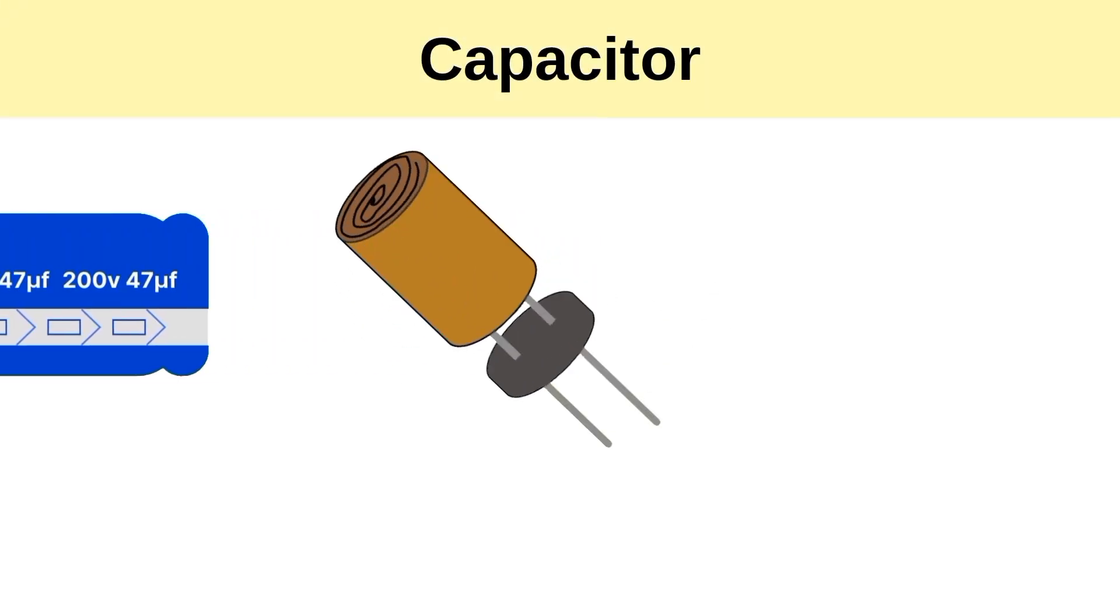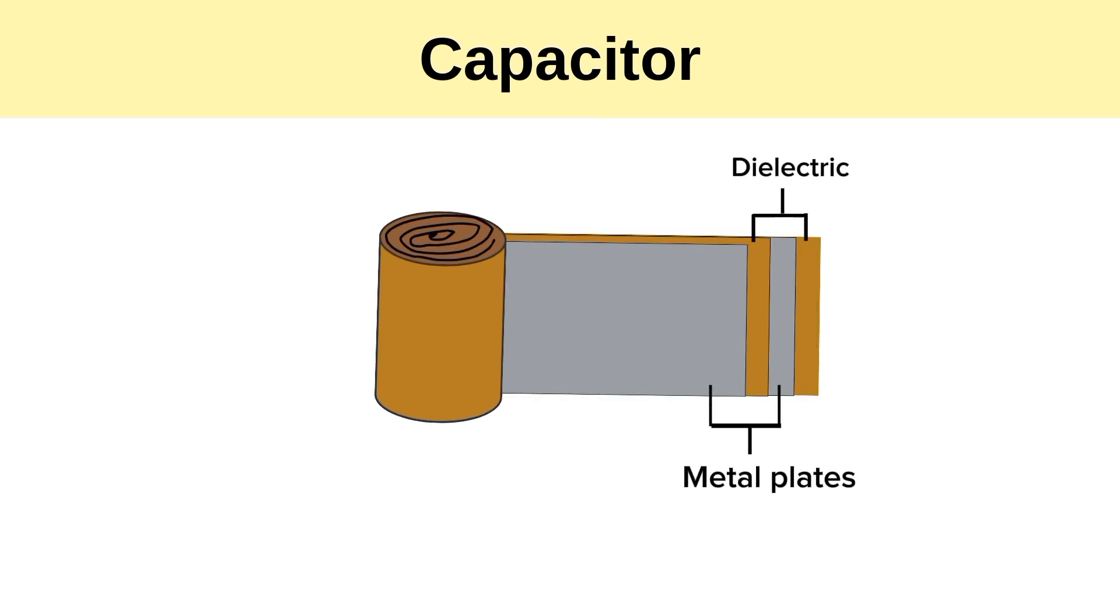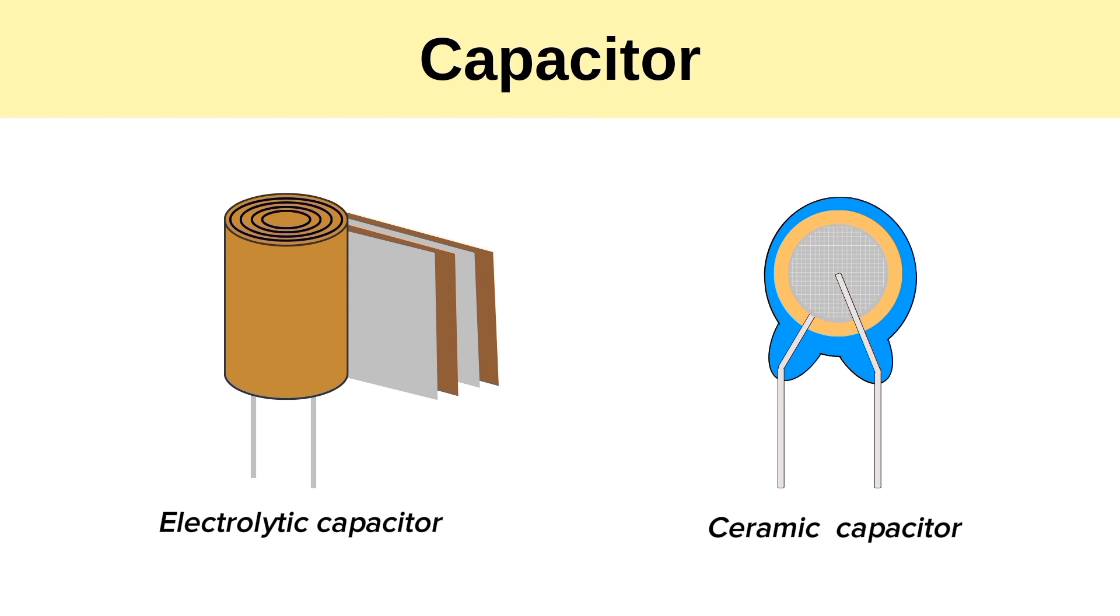Inside the capacitor, we can see two conductive plates separated by an insulator called dielectric. The conductive plates are often made of aluminum, while the dielectric can vary depending on the type of capacitor. Electrolytic capacitors have an electrolyte separating the plates, while ceramic capacitors use ceramic as the dielectric.